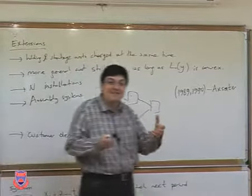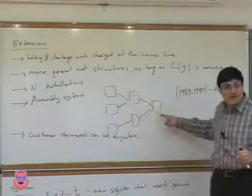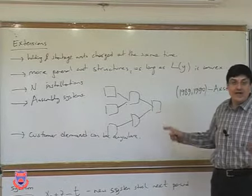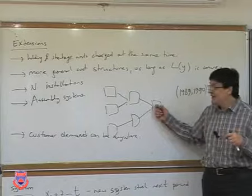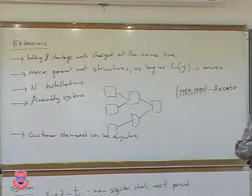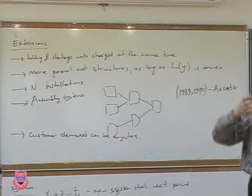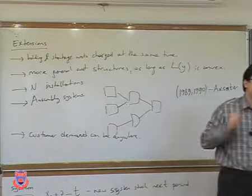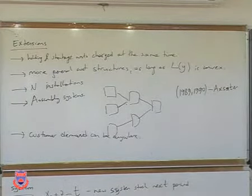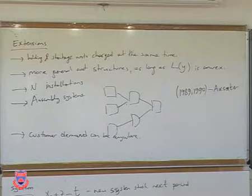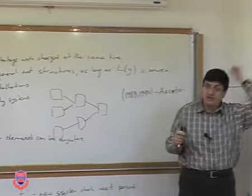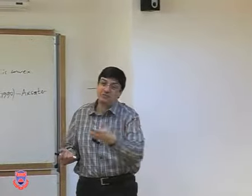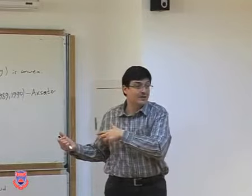Once the function is no longer separable, X2 cannot be optimized independent of what's going on in the individual X1 inventory levels. Separability is lost, making the problem extremely complicated. This is the main relation to supply chains: Clark-Scarf assumes centralized information — all cost and demand information is available to all installations. If the factory owner and retailer owner are different, that information may not be shared, and the system-wide optimum cannot be achieved without coordination.